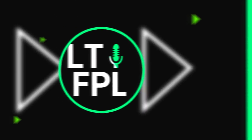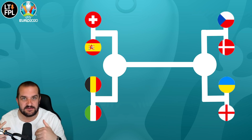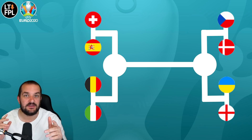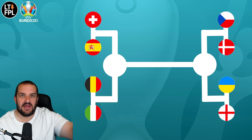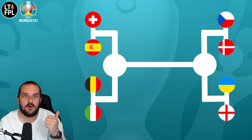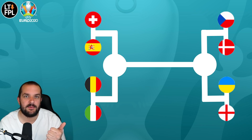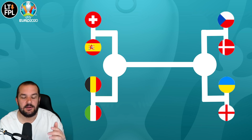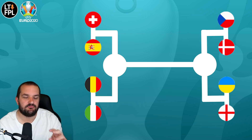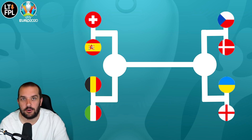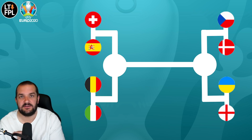Apologies to anyone watching who is German. The main portion of this video before the wild card draft is going to cover players and teams to target, where to focus your transfers, hits, and captaincy. There's a graphic showing the bracket: on the left, Switzerland or Spain versus Belgium or Italy in the semi-final; on the right, Czech Republic or Denmark versus Ukraine or England. We'll cover which players to target and how much risk to take.